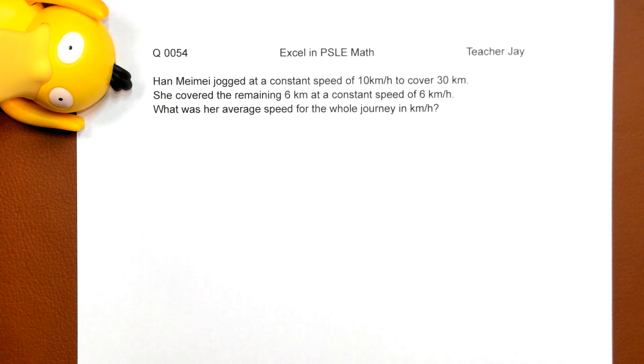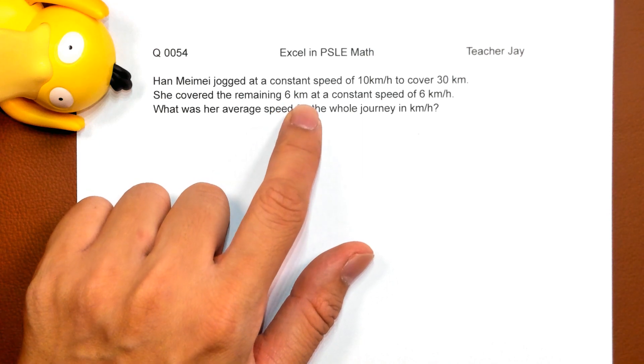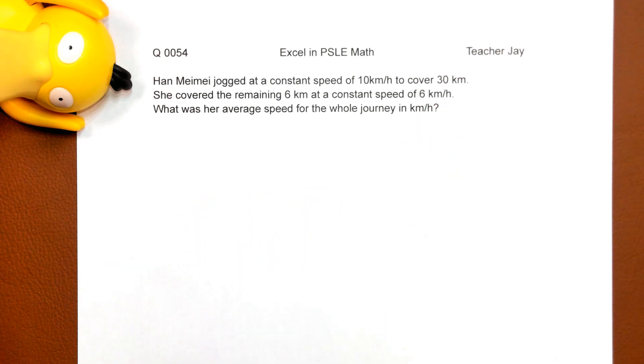她去跑了三十个kilometers, 三十千米。然后呢, she covered the remaining 6 kilometers at a constant speed also of 6 kilometers per hour.